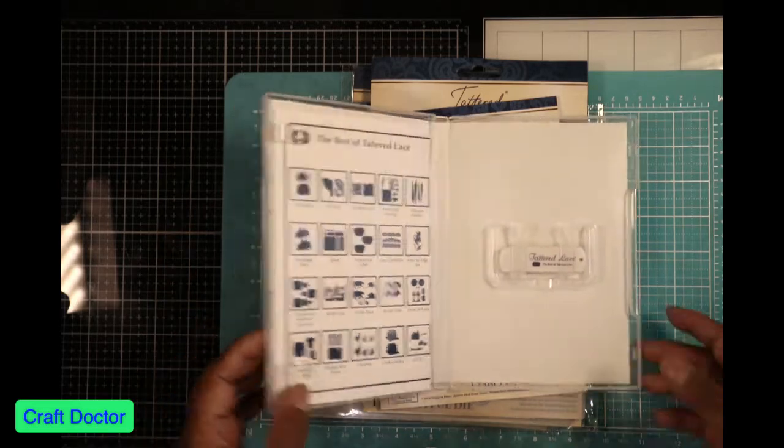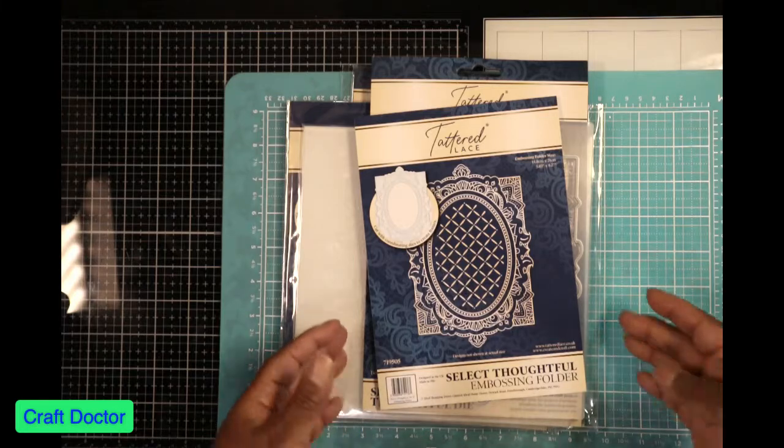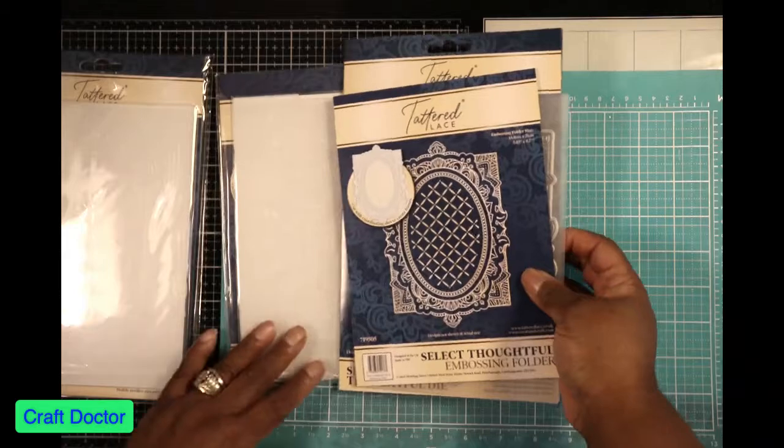I'm gonna wait for the Best of to see if the kits that I like are on there. So that's the first thing. The second thing is this new system that Tattered Lace has, it's called Select.